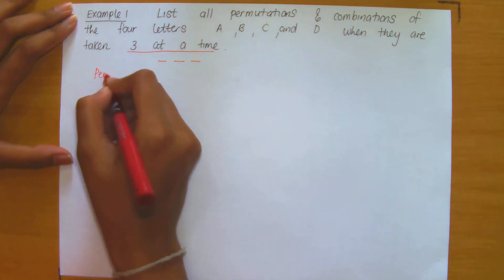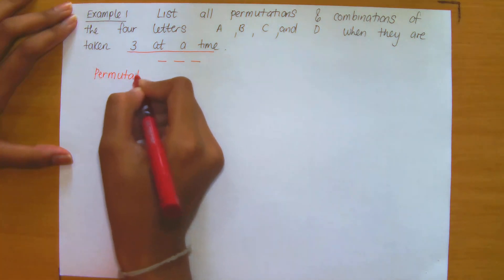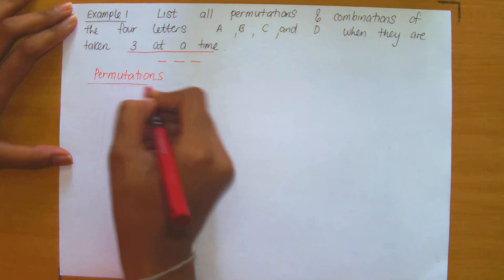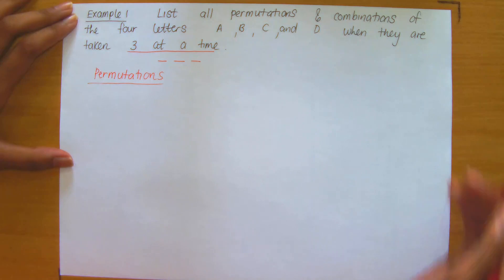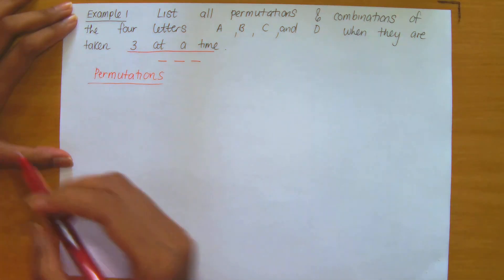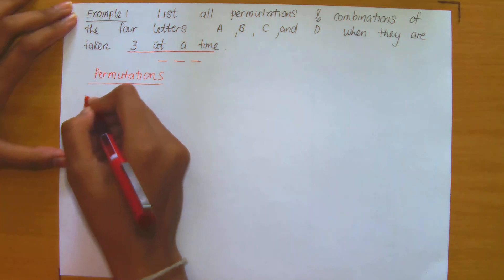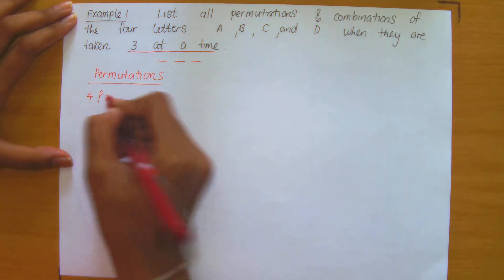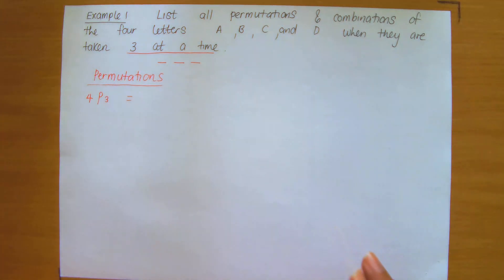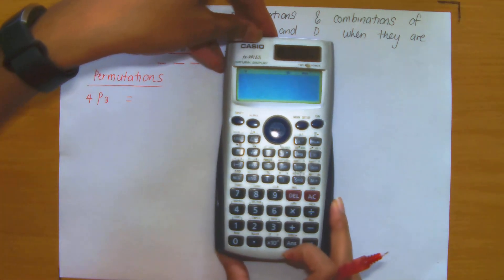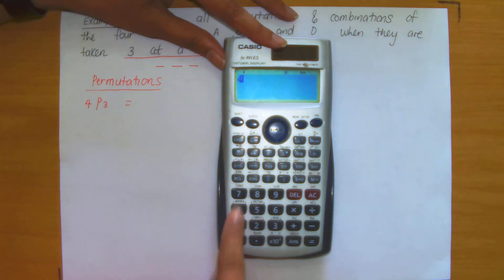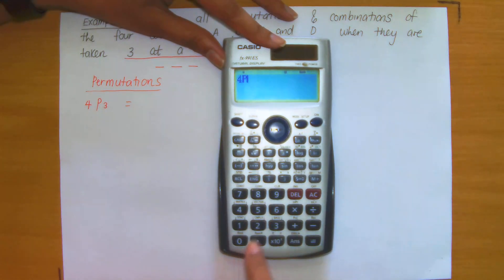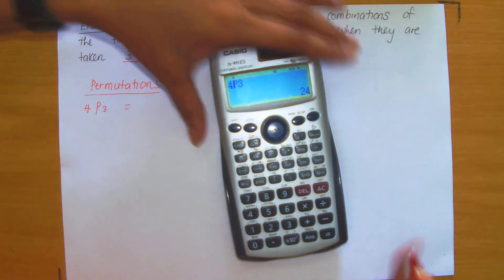I'm going to work with permutations first. But before listing them, remember we have our formula. Let's quickly check how many arrangements we would be listing. We have four letters and we are selecting three, so we are computing 4P3. Entering this into the calculator — selecting permutation and entering the value three — 4P3 gives a value of 24.